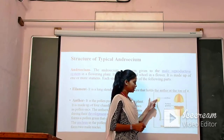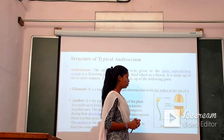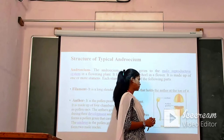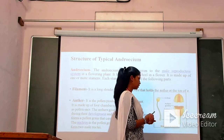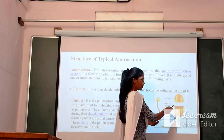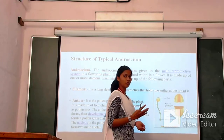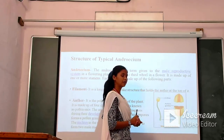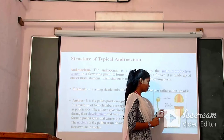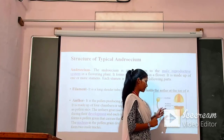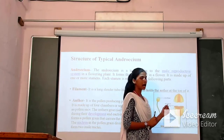This anther is bilobed, or you can say it is dithecous — bilobed means it has two lobes. When you take a transverse section of that anther you will see the two lobes have four chambers. Inside those four chambers you will see pollen sacs; there are four pollen sacs in total. Inside those pollen sacs, pollen grains are developed.